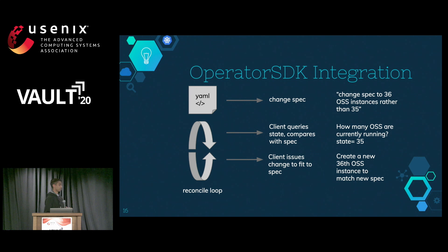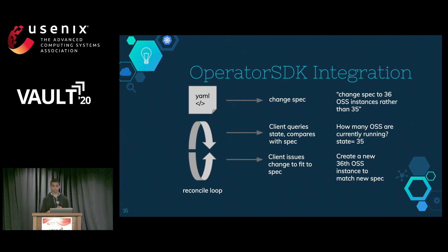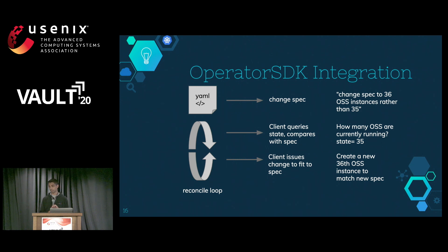Rook and Operator SDK are similar — they both use a reconcile loop — but Operator SDK's is much easier to understand. At any given point you have a YAML spec and the current state. If there's a mismatch between the spec and the state, the reconcile loop determines what that mismatch is and fixes it. For example, if the YAML spec now requires 36 OSS Lustre instances rather than 35, and we currently have 35 running, the reconcile loop will spawn a 36th instance to match the spec.